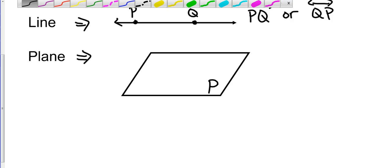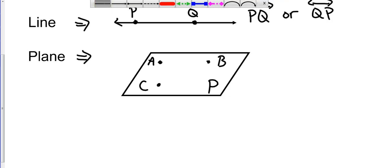This would be plane P. And you might have some different things on here. You could have points A, B, and C that are on that plane. We could connect a couple of those points. Let's get a good line through there.